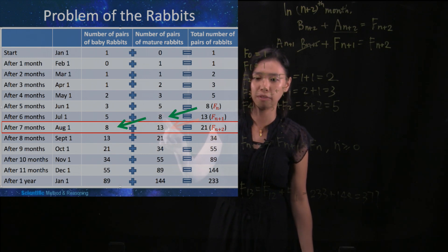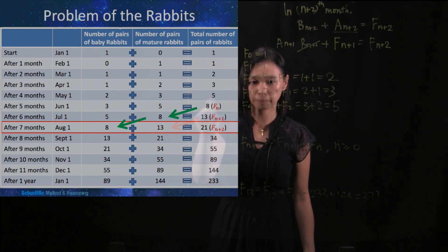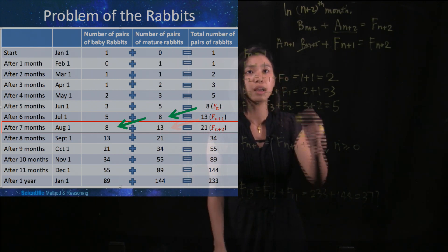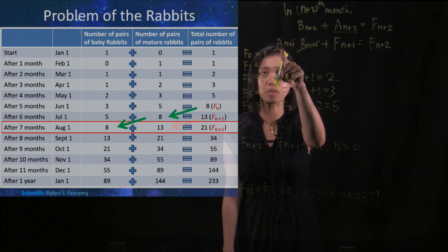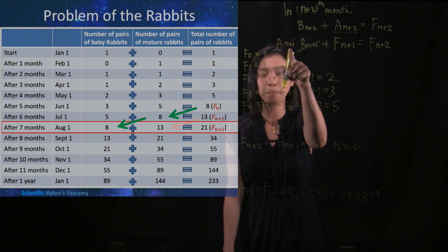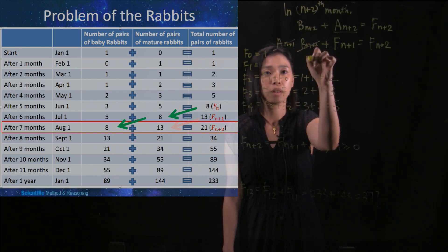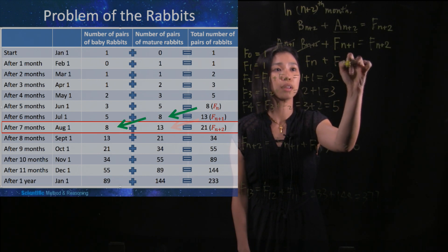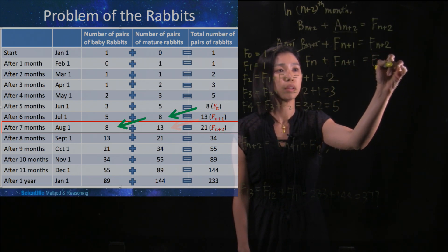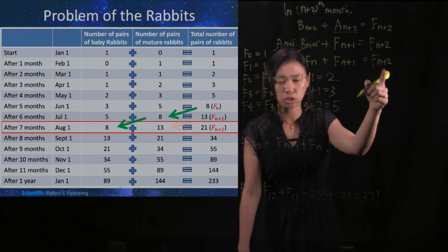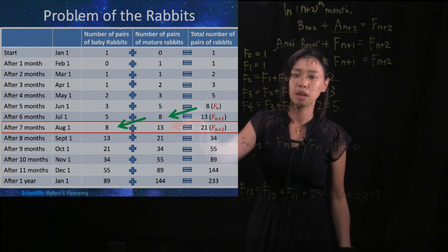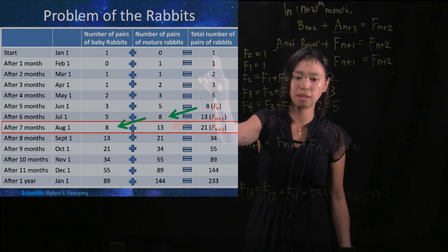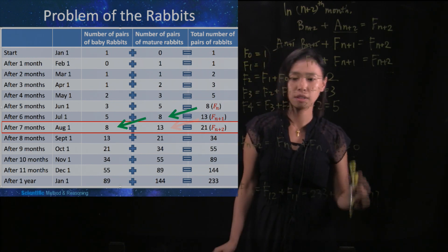And where do the adults in the n plus 1 month come from? The principle is the same: in the previous month, no matter whether they are baby or mature, this month they will all become mature. So the adults in the n plus 1 month are all coming from the total number of rabbits in the n month. That is why we get this equation. This equation requires n greater than or equal to 0, because we start at n equals 0, and we also need initial conditions for this equation.